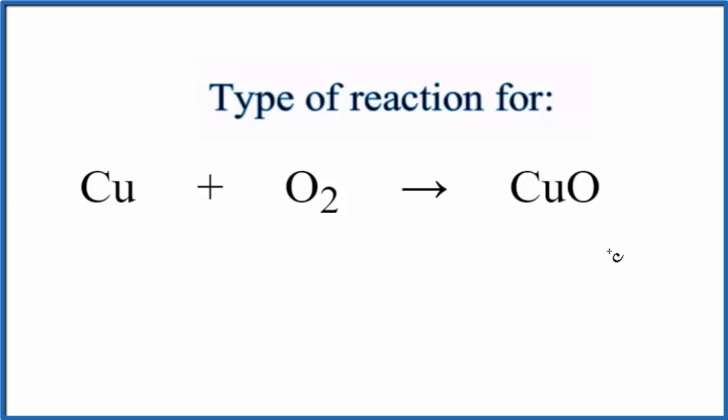When we look at the reaction, we see we have copper and then oxygen. So we have two separate substances in our reactants. These two substances, they come together to form one substance in the products.